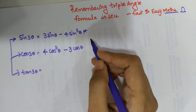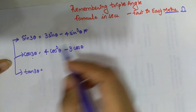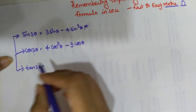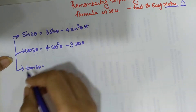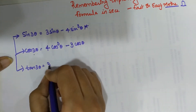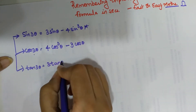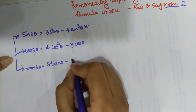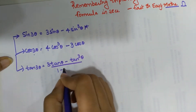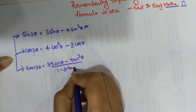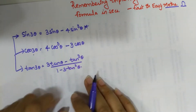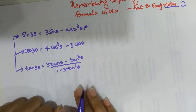For tan 3θ, I'm going to write down the formula and then show you the trick. The formula is: tan 3θ equals 3 tanθ minus tan³θ, all upon 1 minus 3 tan²θ.